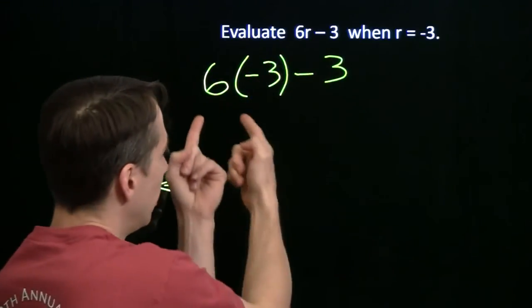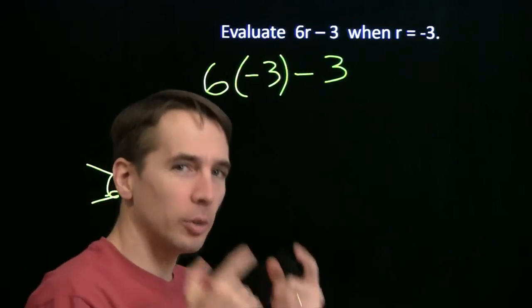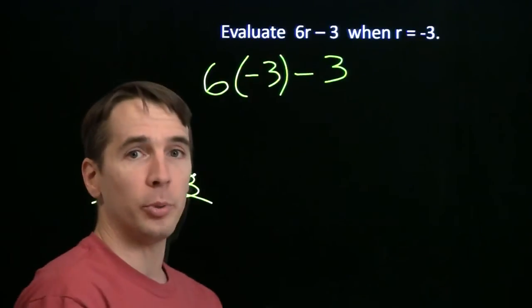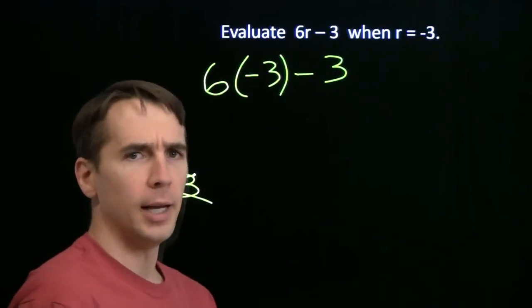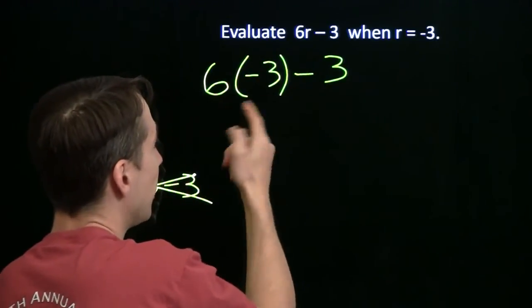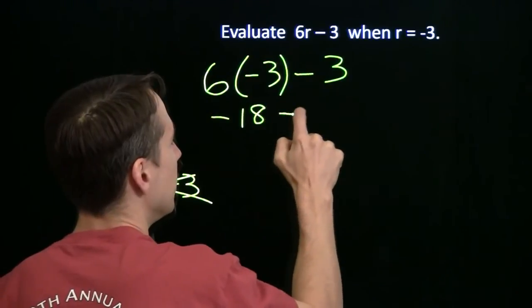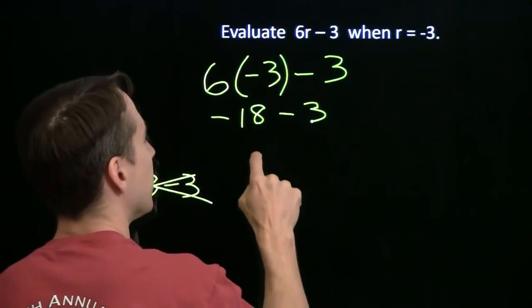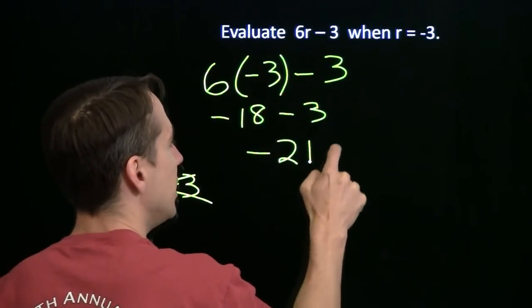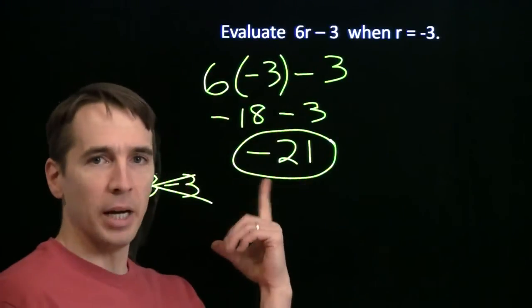We have a multiplication here. The parentheses make it clear to me, make me remember I've got a multiplication here, make me remember I've got a negative number there. Now we've just got the order of operations. 6 times minus 3 is minus 18, and we still have the minus 3 out there. Minus 18 minus 3, that's minus 21.